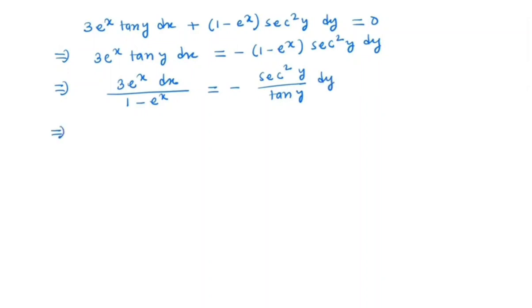In the next step we take this minus here. So we have -(3e^x dx)/(1 - e^x) is equal to (sec^2 y dy)/tan y.